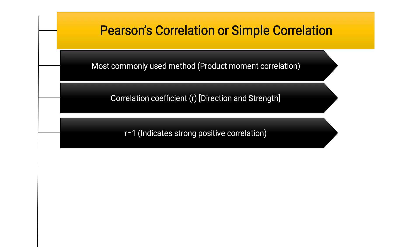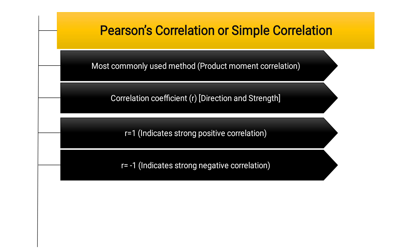If R equals 1, that indicates a perfectly positive correlation, meaning the two variables are perfectly correlated with each other. However, in social science research, perfect correlation is rare. If R equals minus 1, it indicates that the two variables are perfectly negatively correlated — or simply a strong negative correlation.